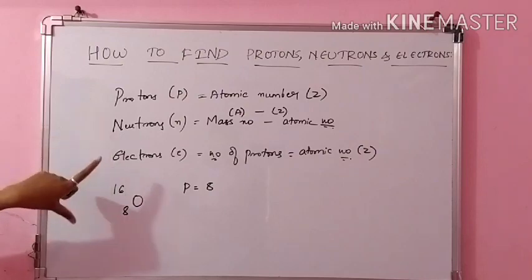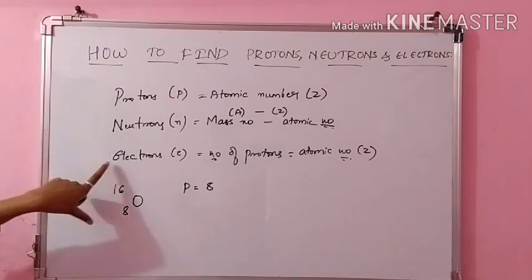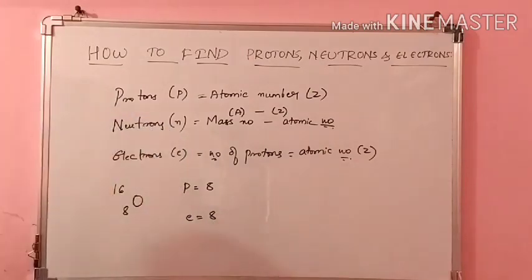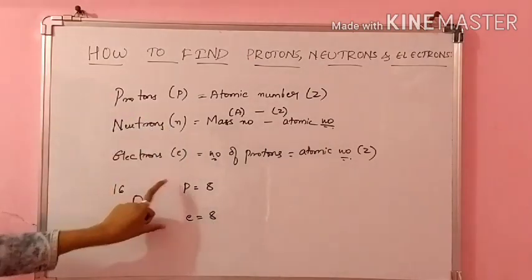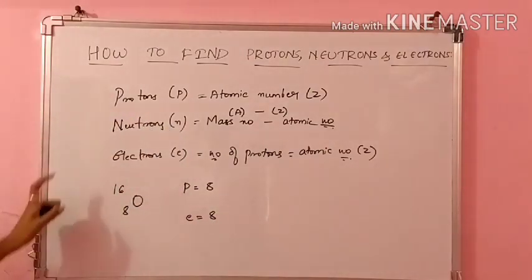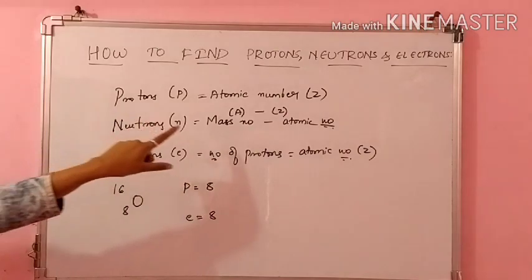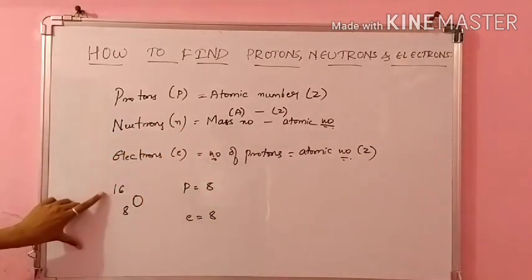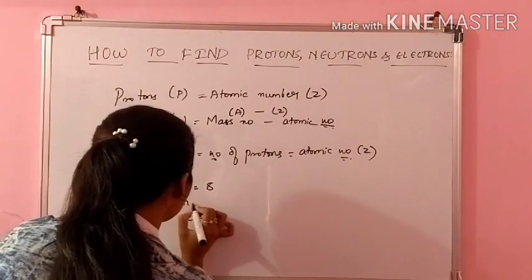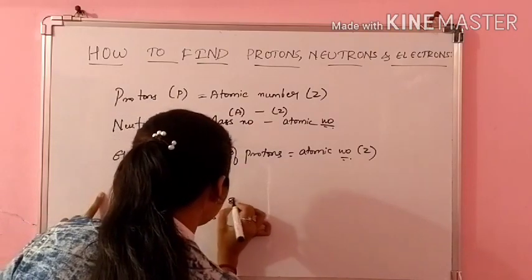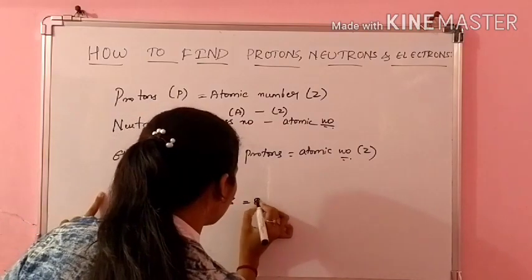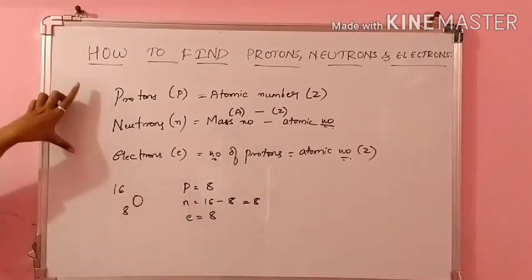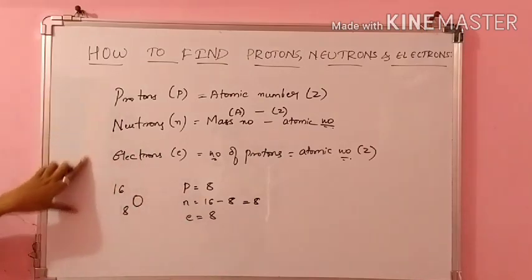And electrons — electrons will again be equal to the number of protons, so electrons is also 8. Because these two are always equal for a neutral atom. And for neutrons, mass number minus atomic number: 16 minus 8, which equals 8. So protons, neutrons and electrons are all found using these three formulas.